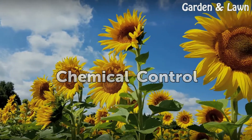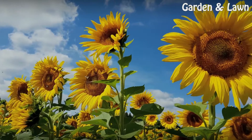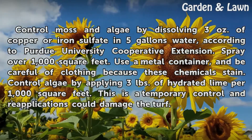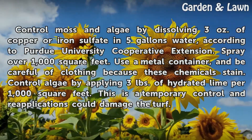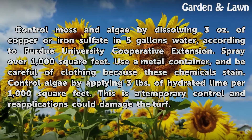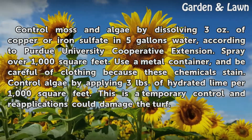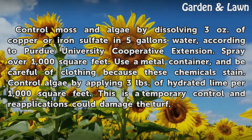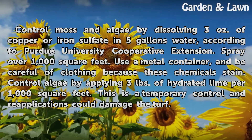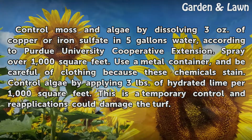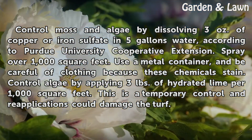Chemical Control. Control moss and algae by dissolving 3 ounces of copper or iron sulfate in 5 gallons of water, according to Purdue University Cooperative Extension. Spray over 1,000 square feet. Use a metal container, and be careful of clothing because these chemicals stain. Control algae by applying 3 pounds of hydrated lime per 1,000 square feet. This is a temporary control and reapplications could damage the turf.